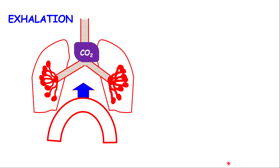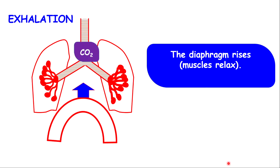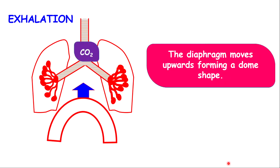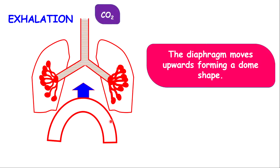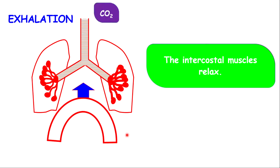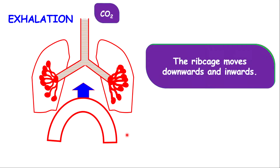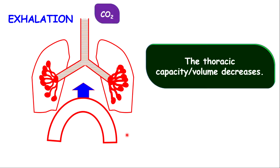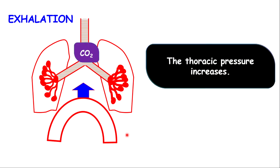During exhalation, the diaphragm rises because the muscles relax. The diaphragm moves upwards forming a dome shape, and it pushes against the lungs. The intercostal muscles relax, and the ribcage moves downwards and inwards, squeezing against the lungs. Because of this, the thoracic volume decreases. The thoracic pressure increases, and this causes air to be forced out of the lungs into the atmosphere.